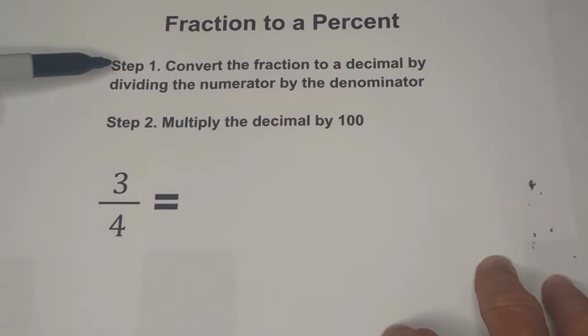We're going to follow two steps. Step one, we are going to convert the fraction to a decimal by dividing the numerator by the denominator. And then we're going to multiply this decimal by 100. So let's get started.